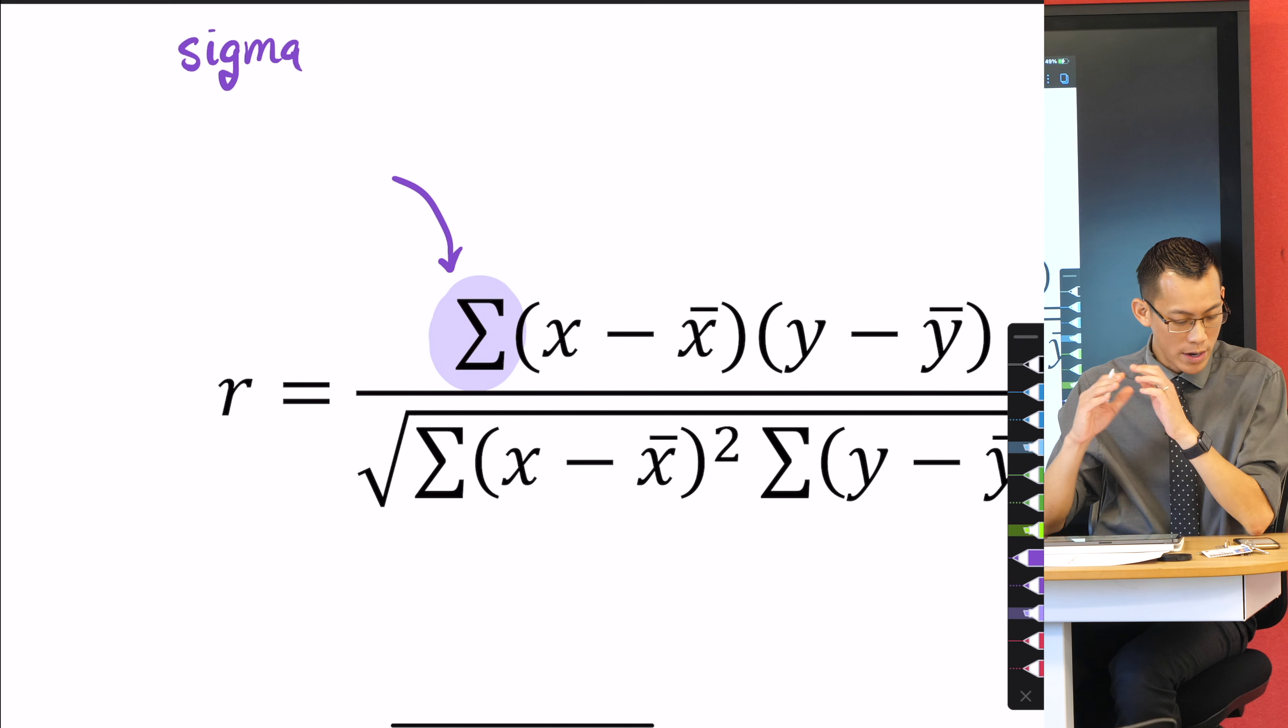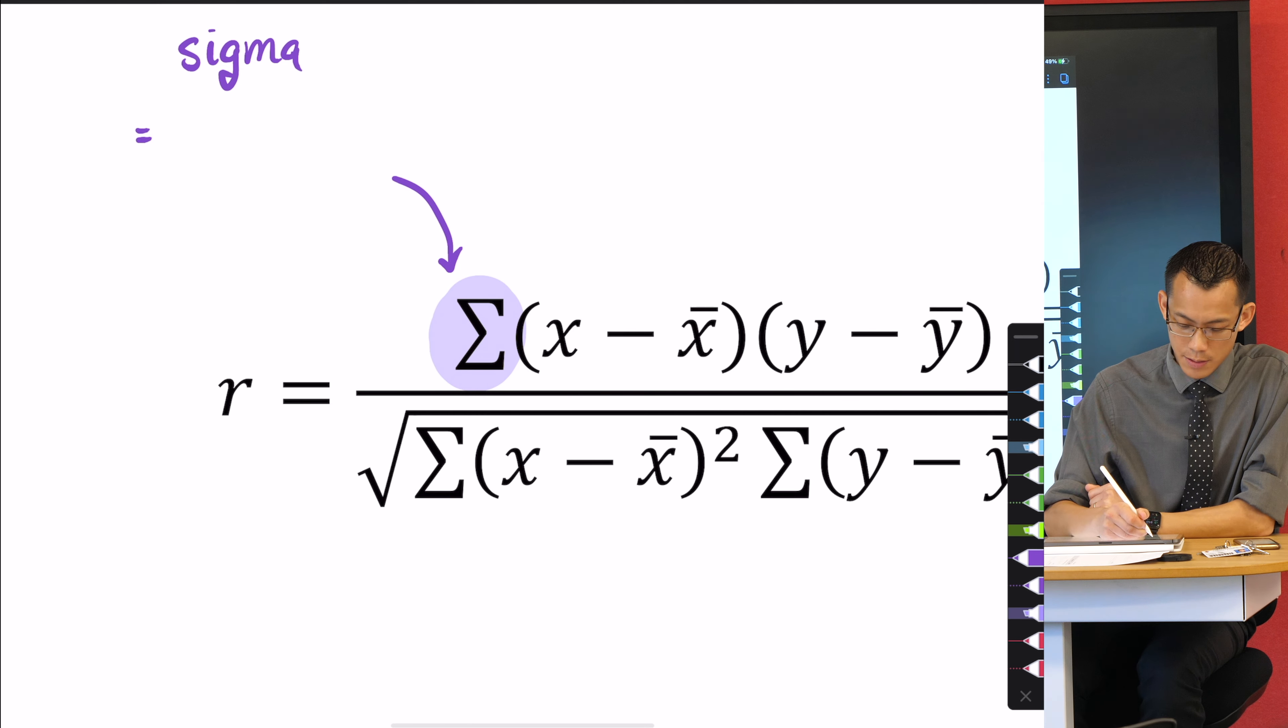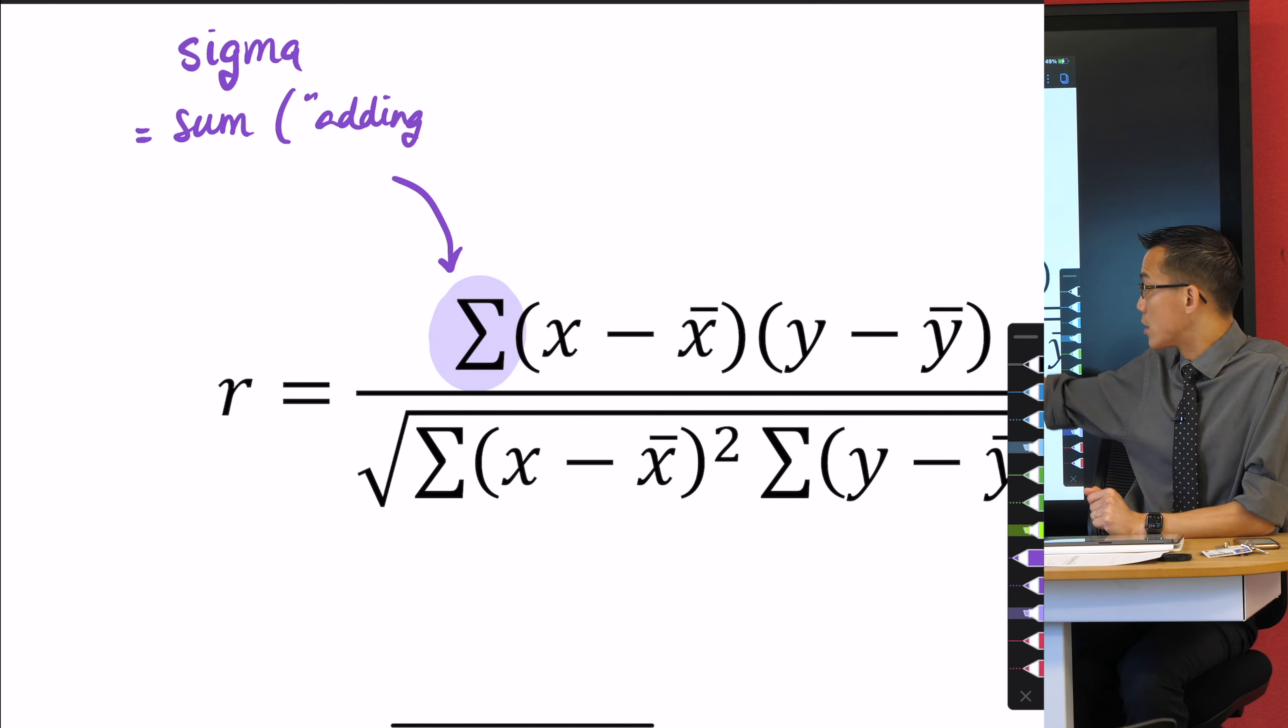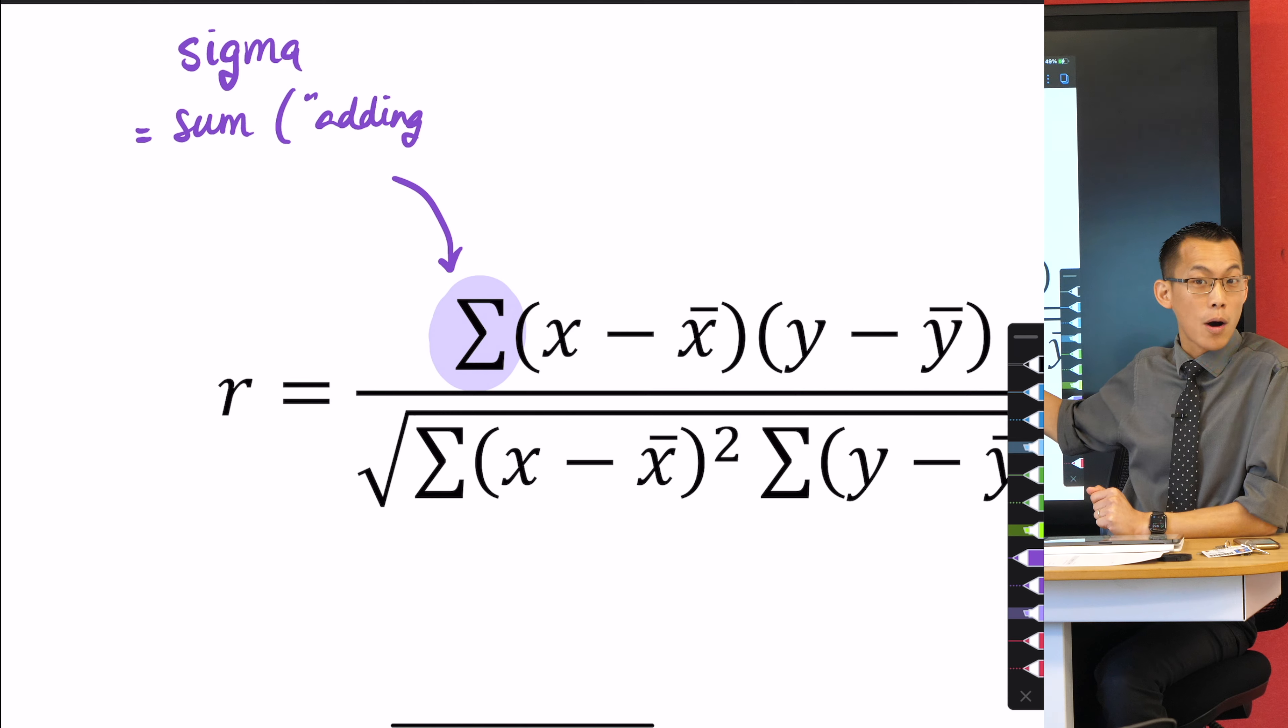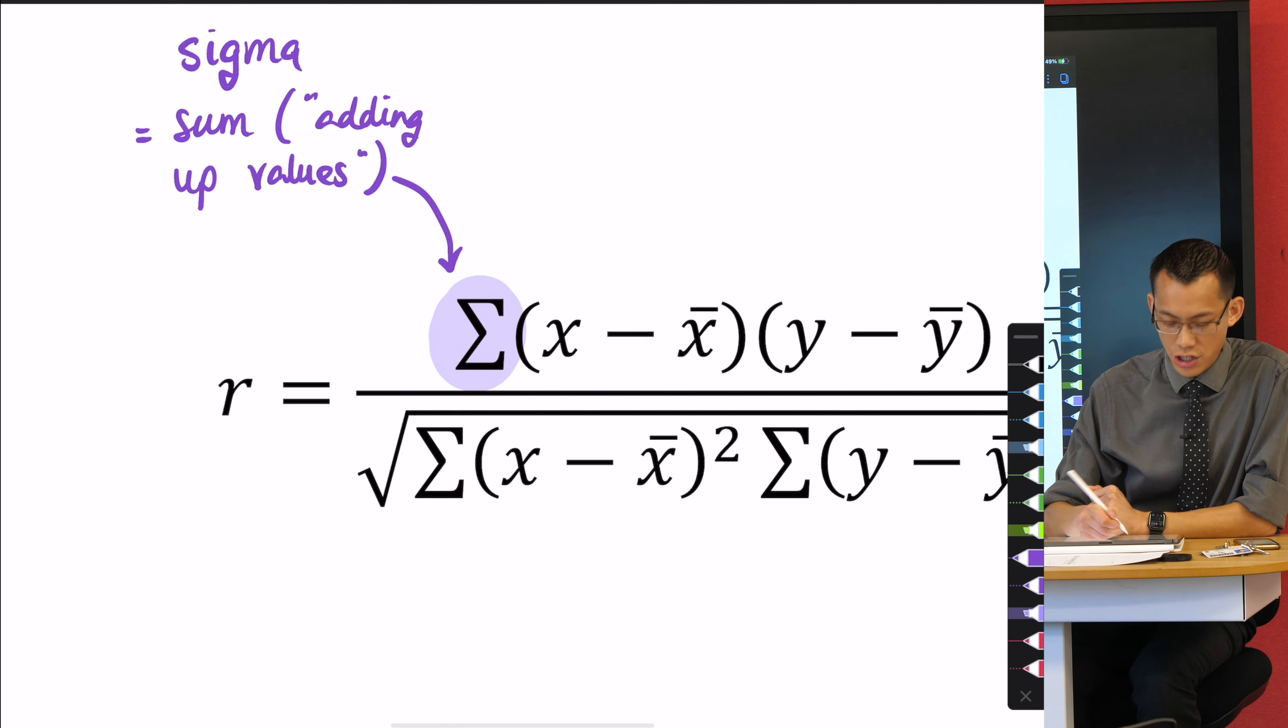It's S for sum. What we're doing is we're adding up a bunch of values. This means sum because we are adding up values. Whenever you see this Sigma, it means whatever comes after that, you're going to add up a whole series of things.